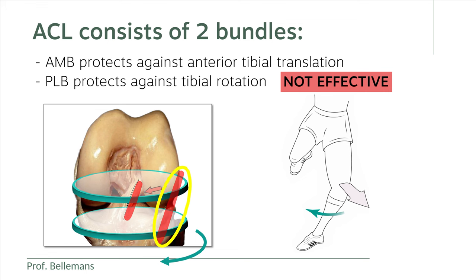And indeed, that is exactly where the anterolateral ligament is located, and it helps the ACL's posterolateral bundle in its protection against rotation. In fact, of the two, the anterolateral ligament is even more effective in this protection than the ACL's posterolateral bundle, as I will demonstrate in a moment.